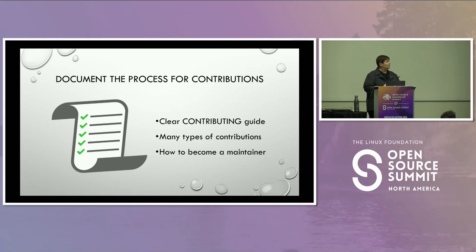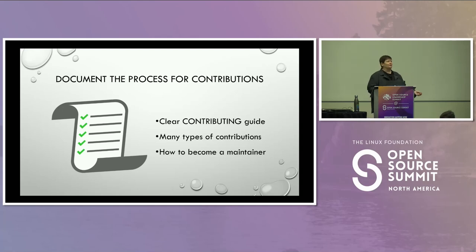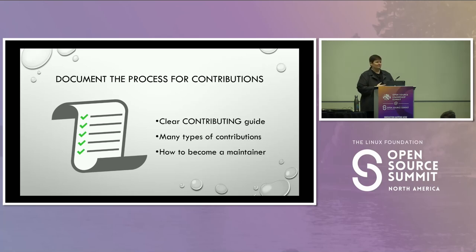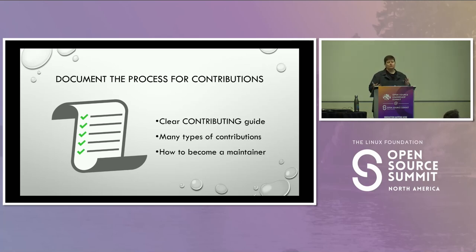It's also really important to document the process for moving from a contributor to a maintainer. How do I go from making that first code contribution to actually being a maintainer of this project? What steps do I need to take to reach that state of maintainership? Is there a certain number of pull requests required? A certain number of code reviews? Make sure whatever the process is, it is documented.